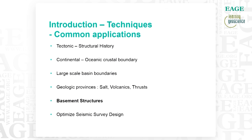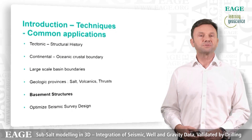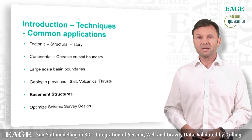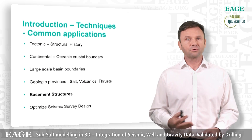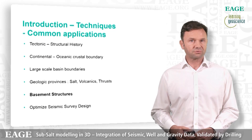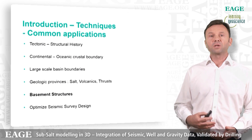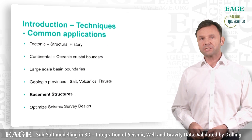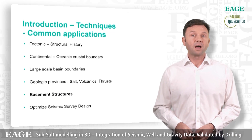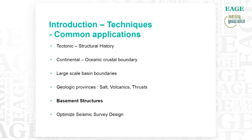To give an overview of common applications of the gravity technique: it's most often used for looking at tectonic structure, which gives a window on the structural history of a basin. It can be used to differentiate between different types of crust — continental or oceanic — and detail those crustal boundaries. It can be used for large-scale mapping of basins, and it can outline geological provinces, salt provinces, volcanic provinces, and thrusted terrains. Here we're going to use it to look at basement structure, and it also has application in optimizing other geophysical acquisitions like seismic.